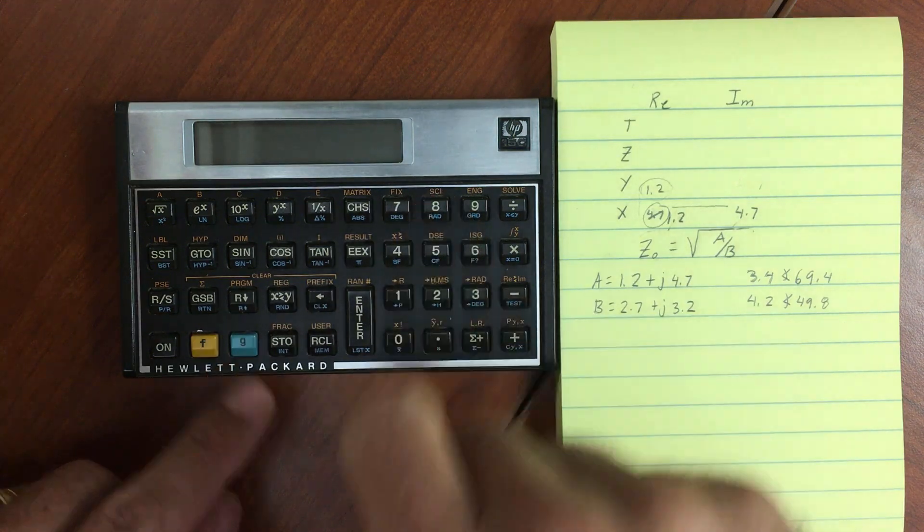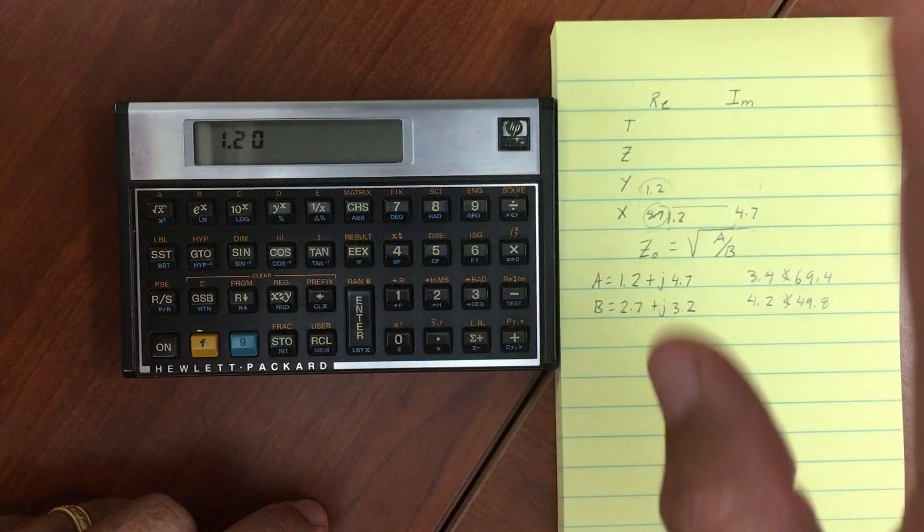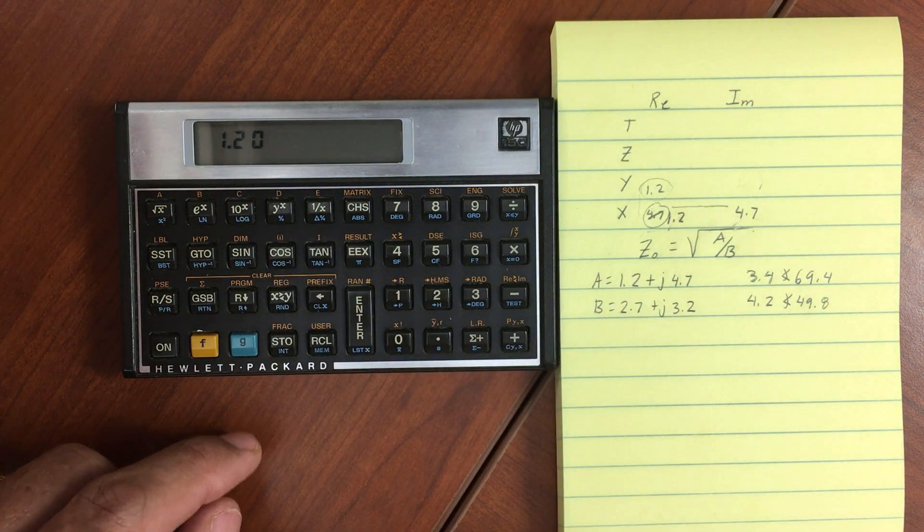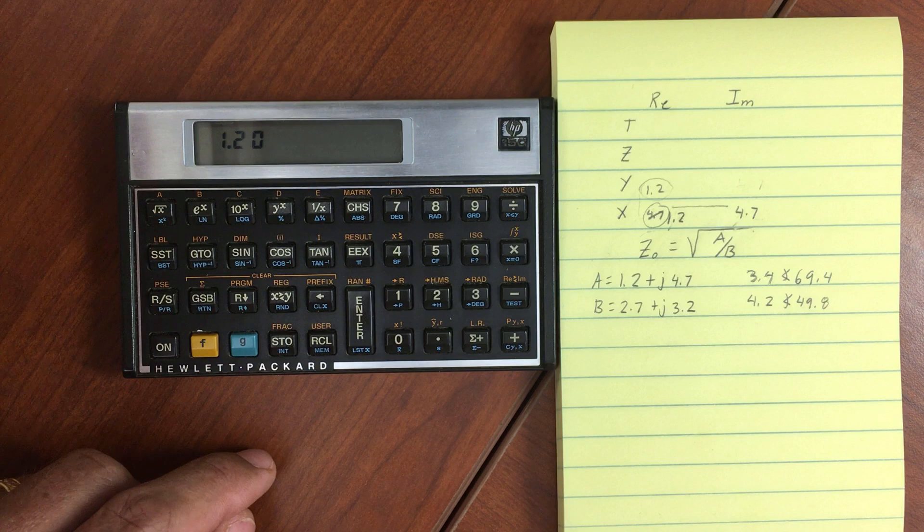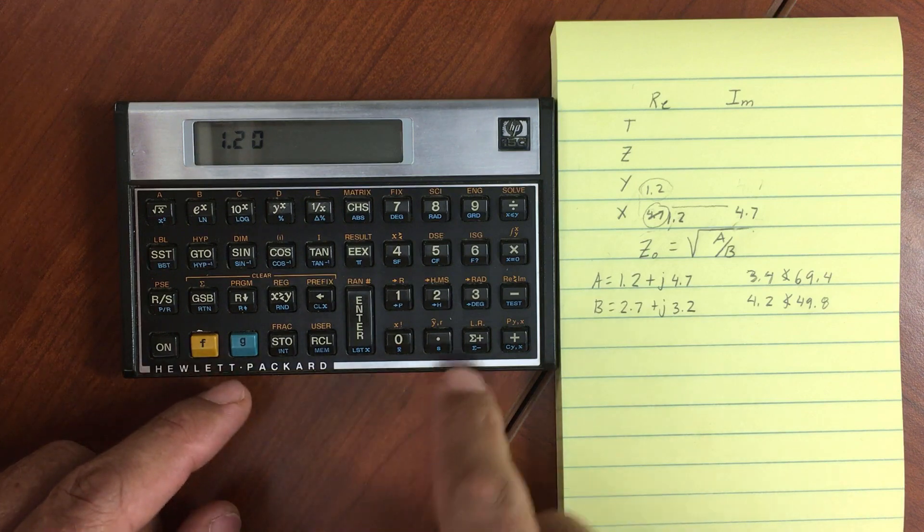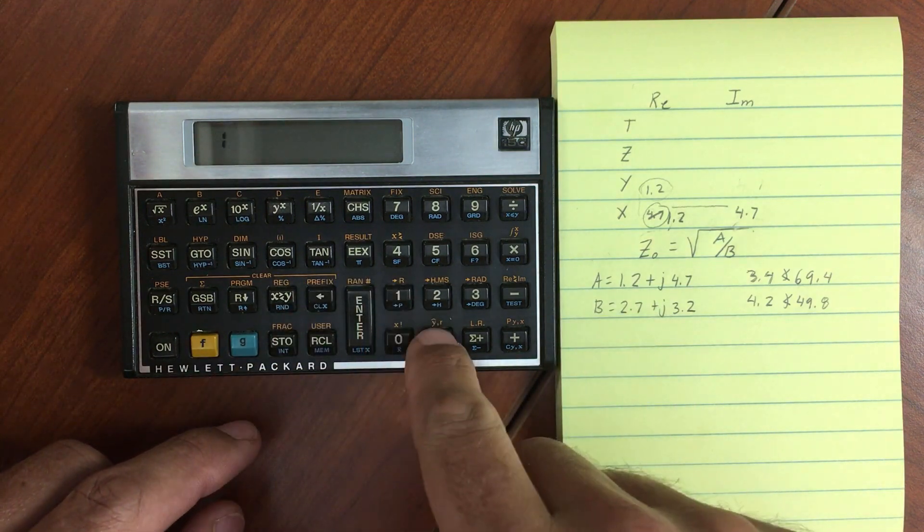And now that imaginary stack has disappeared, and we only have our real number remaining here. So let's go ahead and enter a complex number and do a calculation. So like we had here, let's do 1.2.